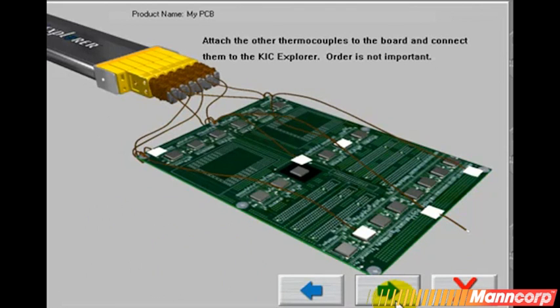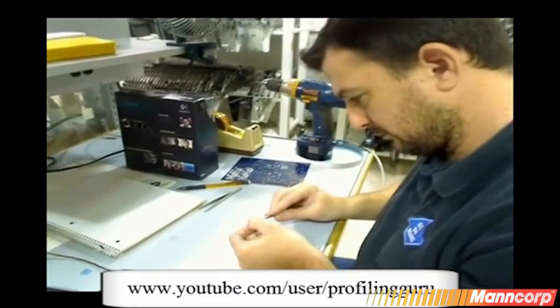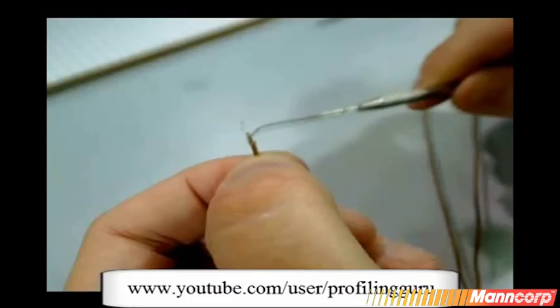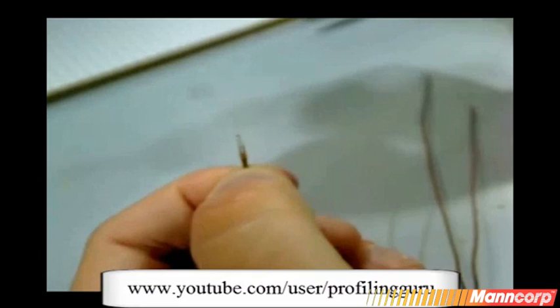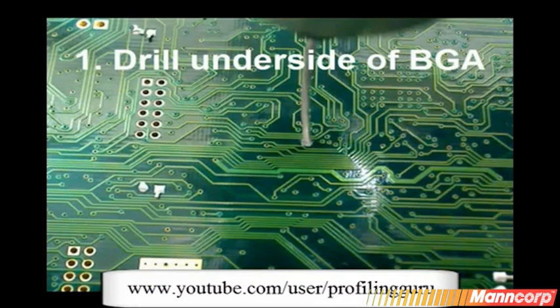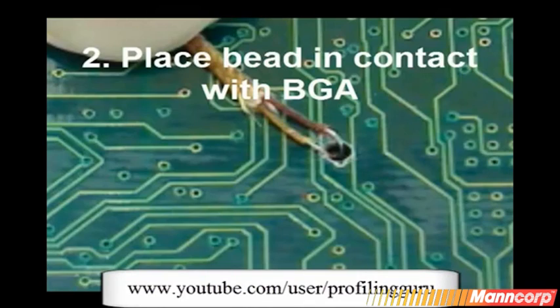Go ahead and mount the remainder of your TCs. For most PCBs, 3 to 5 is the average number required. There are units available on the market that allow for a much greater number of TCs. If you'd like to learn more about TC prep and attachment, you can find videos on this subject on YouTube.